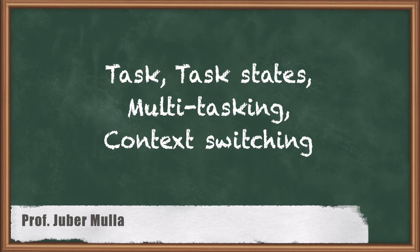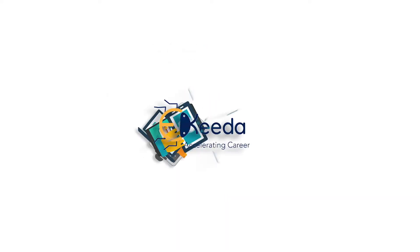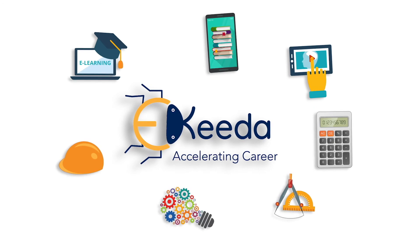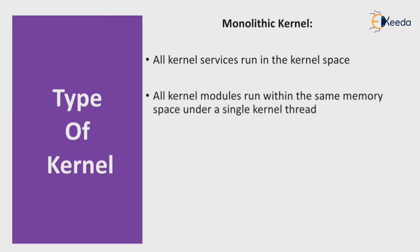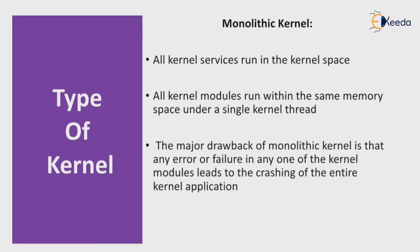So let's start with types of kernel. The kernel has different types. First is the monolithic kernel. All kernel services run in kernel space, and all kernel modules run within the same memory space under a single kernel thread. The major drawback of the monolithic kernel is that an error or failure in any one kernel module leads to the crashing of the entire kernel application.